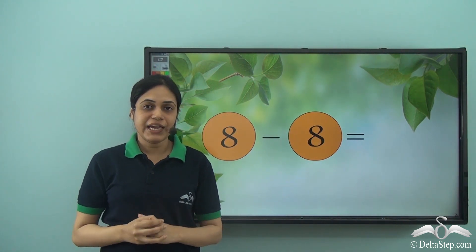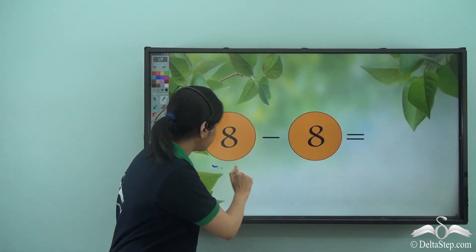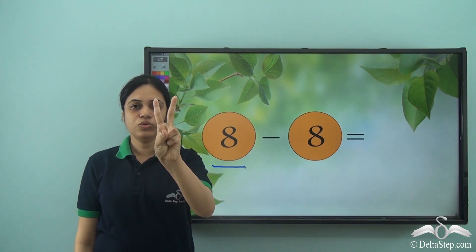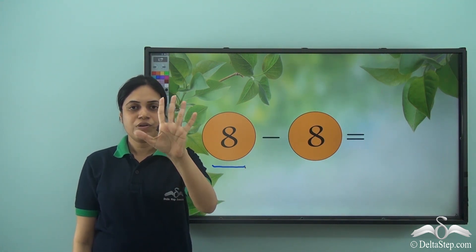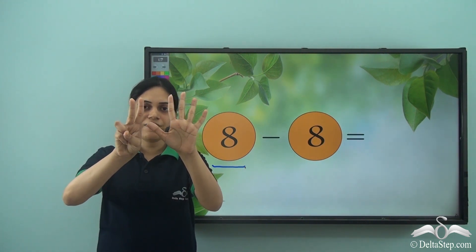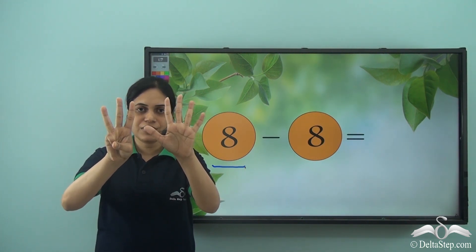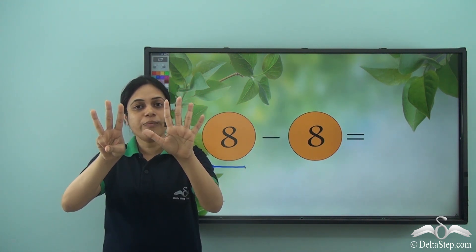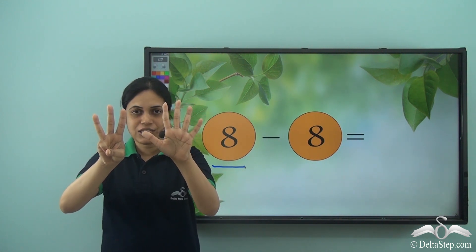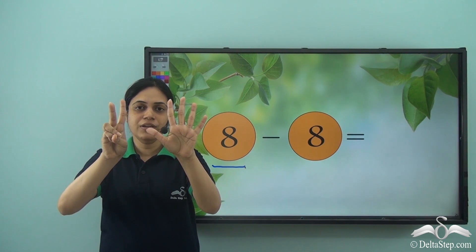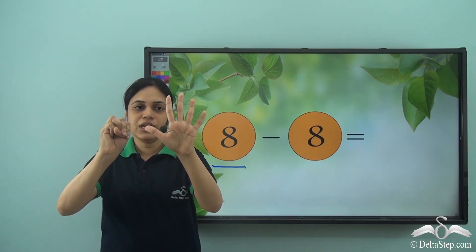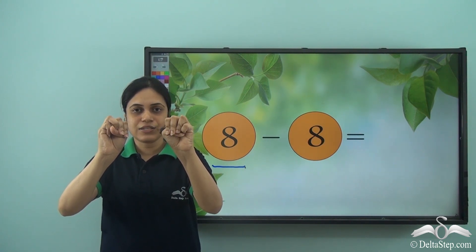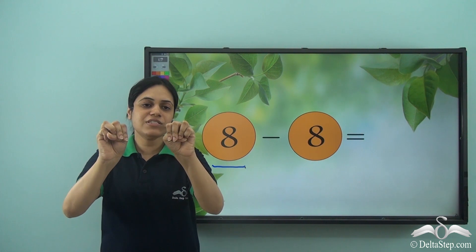And what is eight minus eight? First let us open eight fingers. So one, two, three, four, five, six, seven, eight fingers. And how many fingers do I need to remove? Or how many fingers do I need to close? Eight. So let's do that. One, two, three, four, five, six, seven, eight.